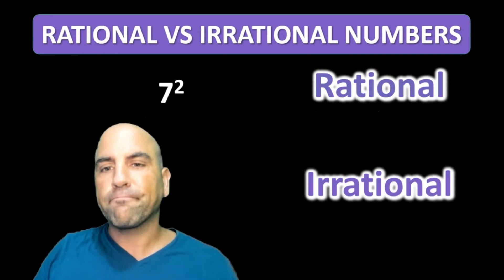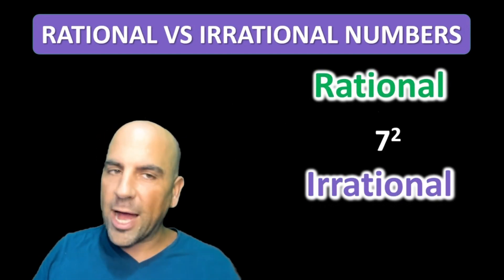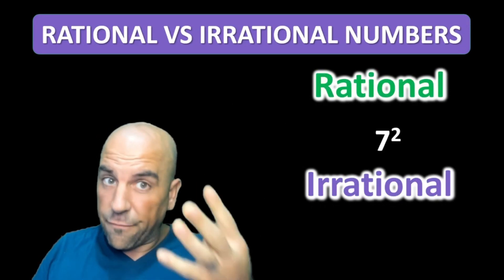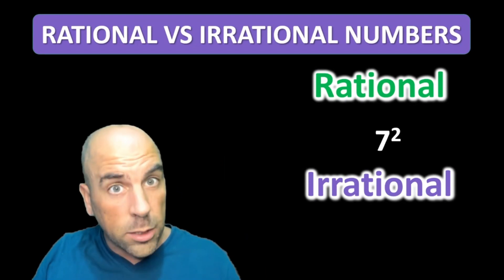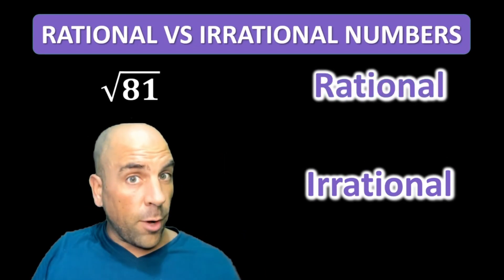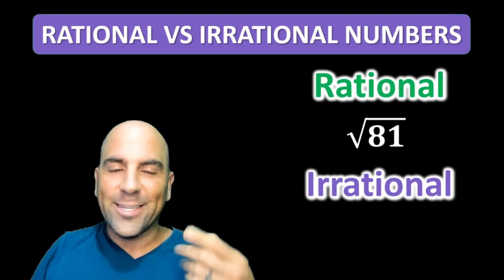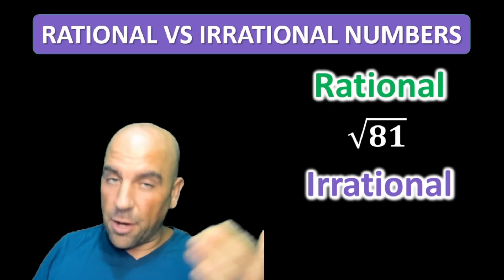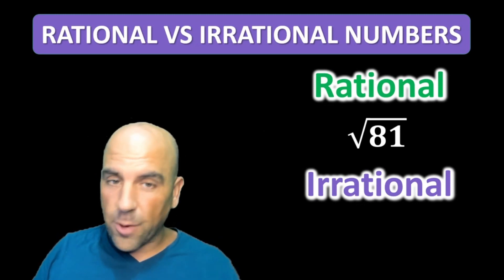What about seven squared? That's rational — that's 49, i.e. 49 over one. Square root of 81? The square root of 81 is nine, nine over one — it's rational.